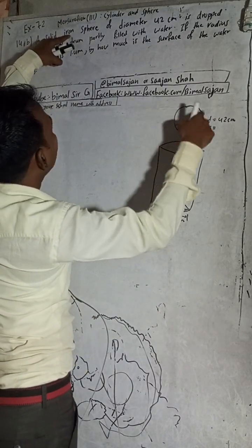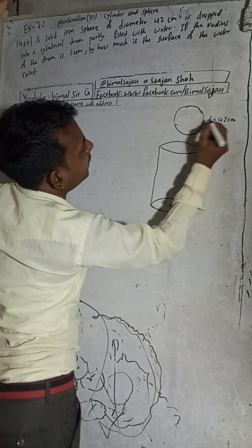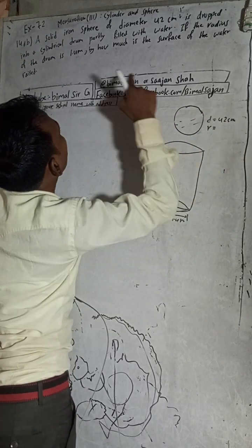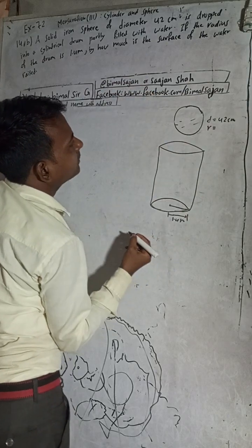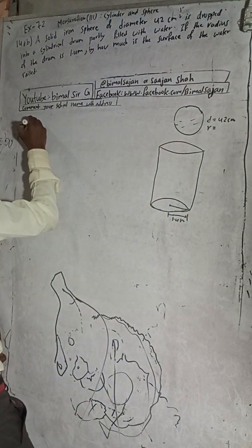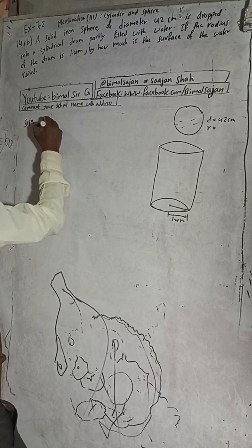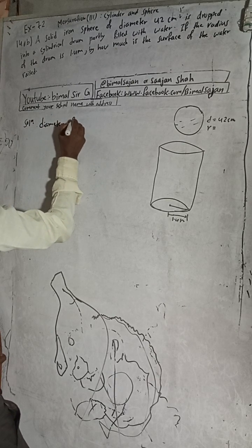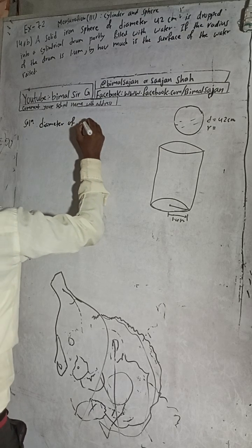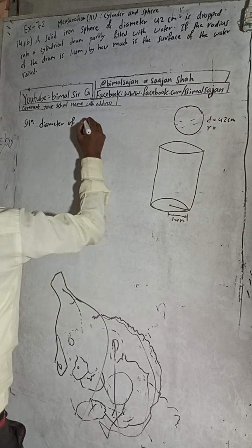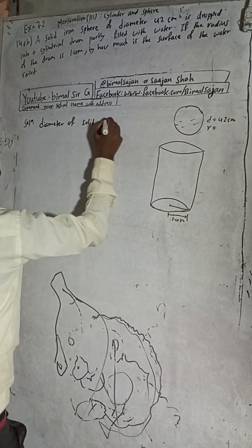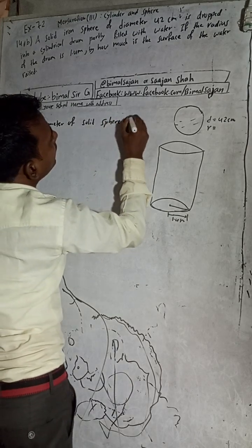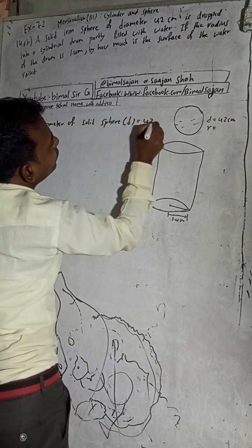This figure I have drawn. This is a solid iron sphere. The diameter of the solid sphere is 42 cm.